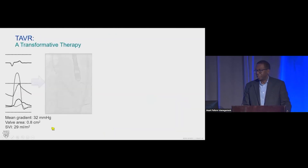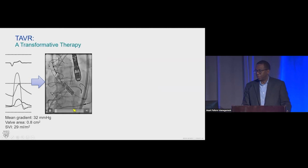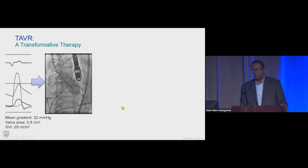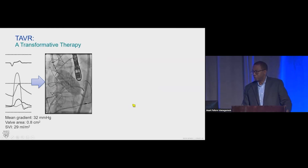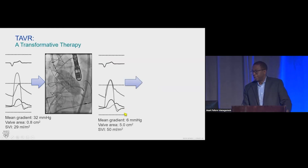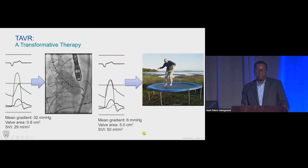This is an example of how we do it — transfemoral access with one of the Sapien valves. It's a balloon-expandable valve, and within 10 seconds you replace somebody's valve without opening their chest and without any of the things involved in open-heart surgery. Very good hemodynamics post-op, and patients are back to normal activities fairly quickly. There's now even the idea that if someone has TAVR early enough in the morning, they could leave the hospital that afternoon rather than spending five to seven days inpatient as they would with open-heart surgery.